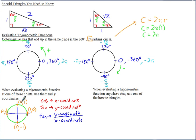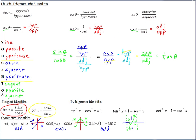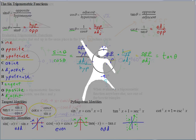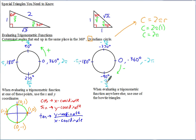That's easiest when evaluating at one of those four axis points. However, if you're evaluating a trig function in between those four points, I think it's personally easiest to use what I call the bow-tie triangles. If you don't like doing it this way, you can use the unit circle if you have it memorized, but many people memorize it temporarily and then forget it.